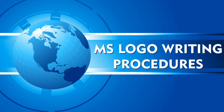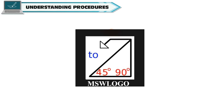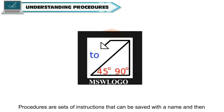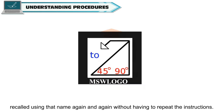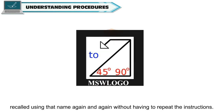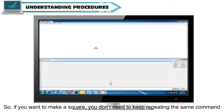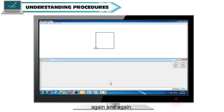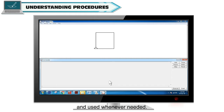Understanding Procedures. Procedures are sets of instructions that can be saved with a name and then recalled using that name again and again without having to repeat the instructions. So, if you want to make a square, you don't need to keep repeating the same command again and again. You can make Logo remember a sequence of commands to be repeated and used whenever needed.